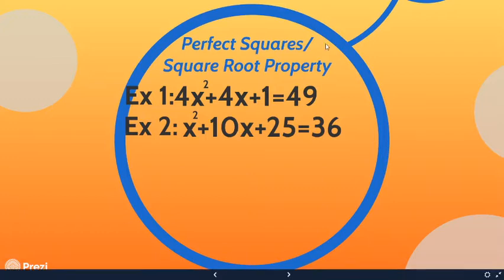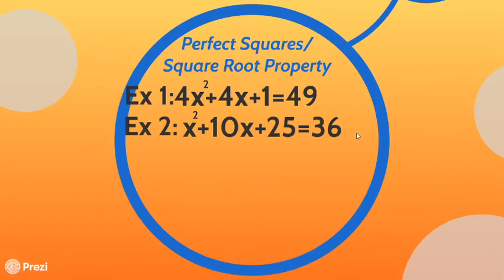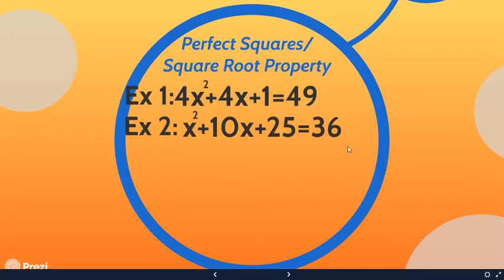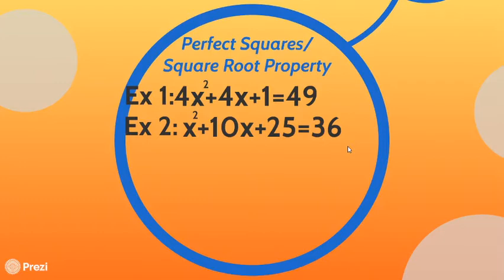Normally what you do is make one side of your equation equal to zero, because you're solving for the zeros, roots, x-intercepts, solutions — they all mean the same thing. Then you'd solve by either factoring or the quadratic formula. But these problems are not going to make one side zero because I'm just trying to show you techniques for what you're about to do later. Just know you normally don't solve equations like this — you're just practicing some key steps for when we complete the square.